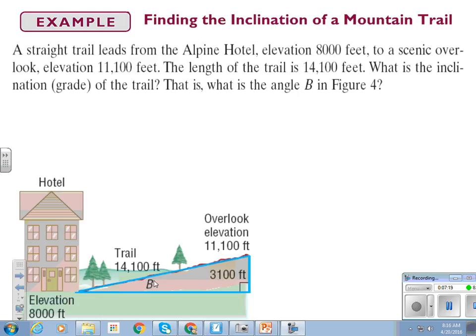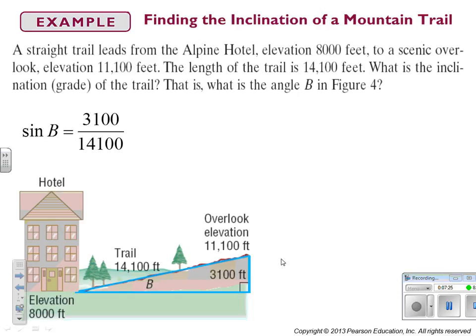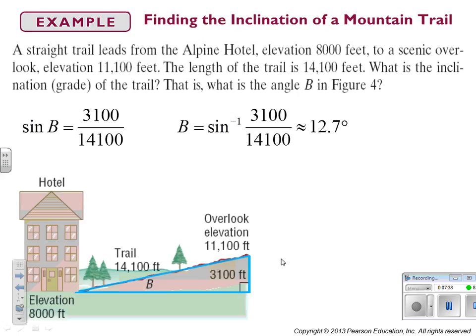We have the side opposite our angle. We have the hypotenuse. So, opposite over hypotenuse is sine. So, we're going to go ahead and inverse sine 31 over 141. I wouldn't even bother putting in the zeros. So, when we do that, we get 12.7 degrees. The hardest part of word problems like these are drawing the pictures. Trigonometry is something we've been tackling since algebra 1, so that part's okay. It's making sure your picture makes sense. So, the inclination or the grade of the trail is approximately 12.7 degrees.